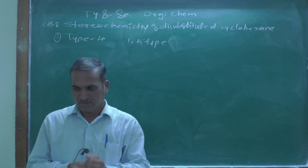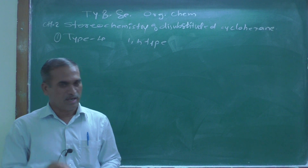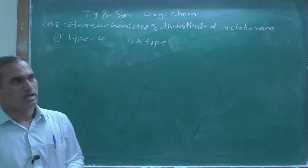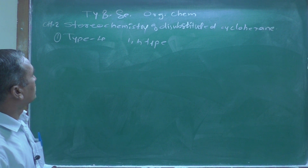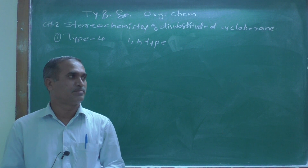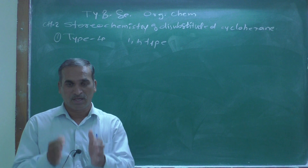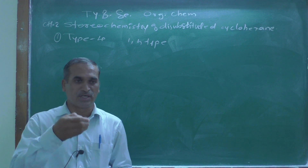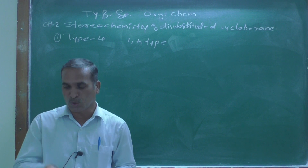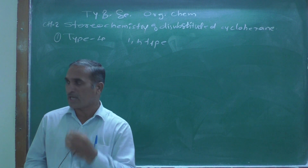Good morning students. Today we are at the end of chapter two, which is titled 'Stereochemistry of Disubstituted Cyclohexane.' We have covered all the general information about stereochemistry, and specifically in this chapter we considered the most stable chair conformation of disubstituted cyclohexane.